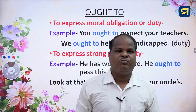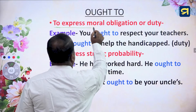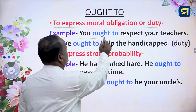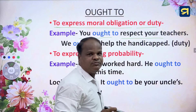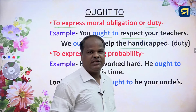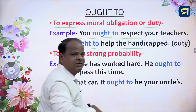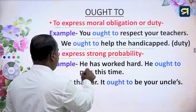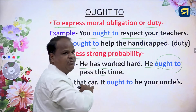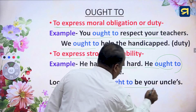'Ought to' is used to express moral obligation or duty — for example, 'You ought to respect your teachers' and 'We ought to help the handicapped.' Another use is to express strong probability: 'He has worked hard, he ought to pass this time.' Also: 'Look at the car — it ought to be your uncle's.'